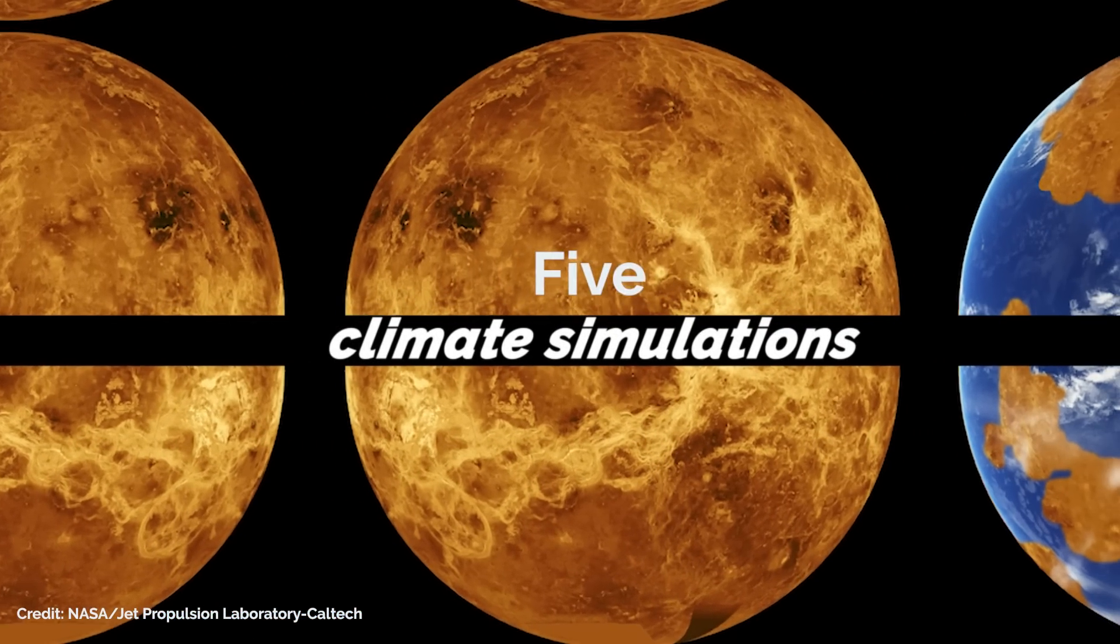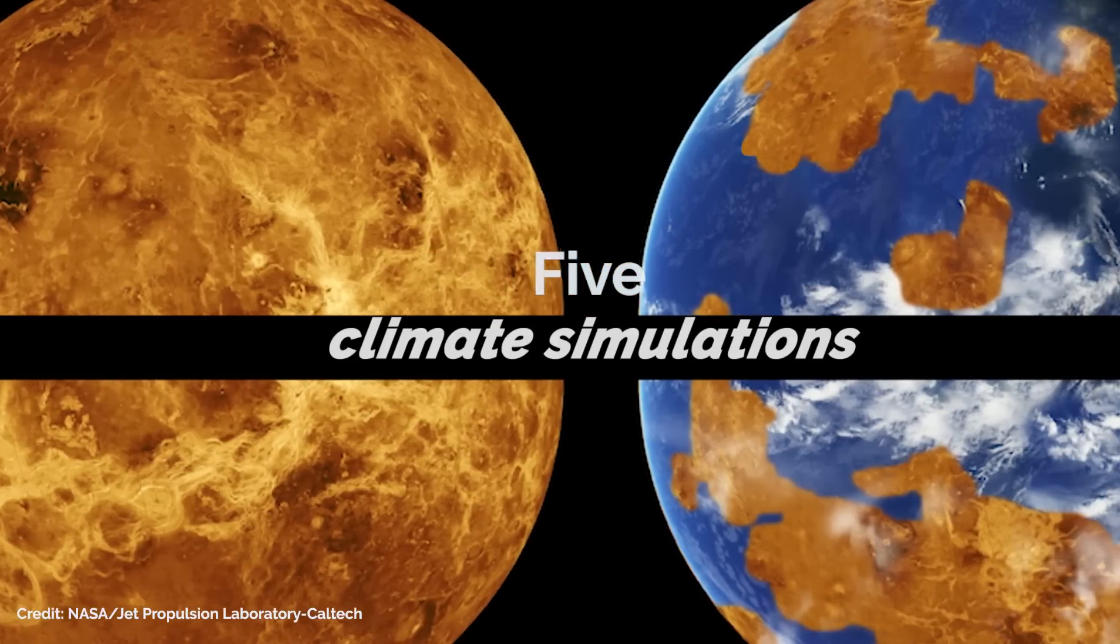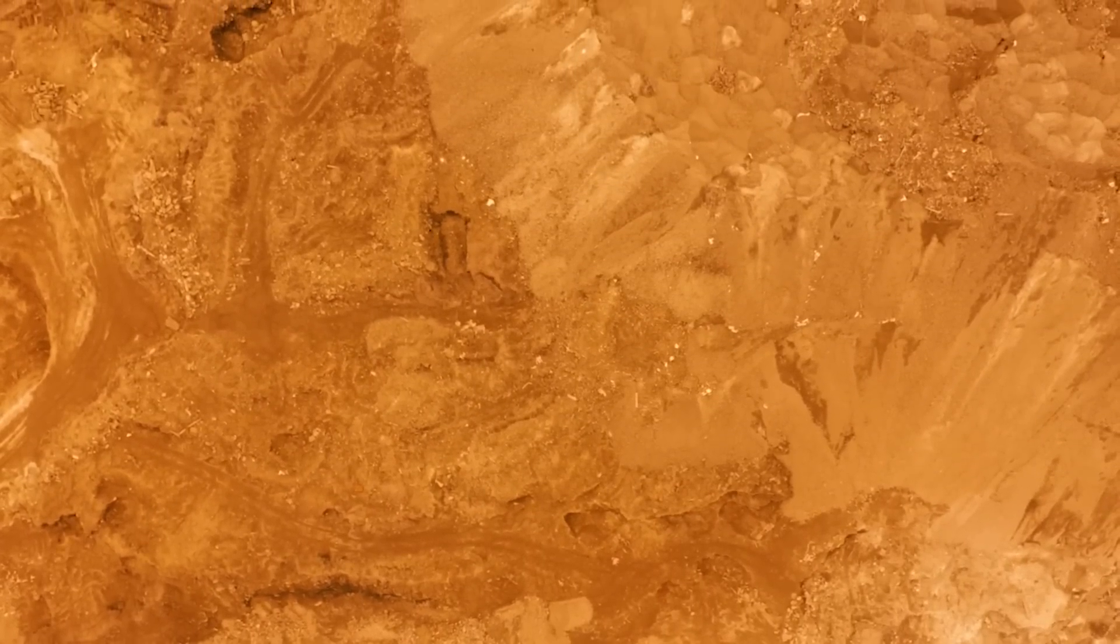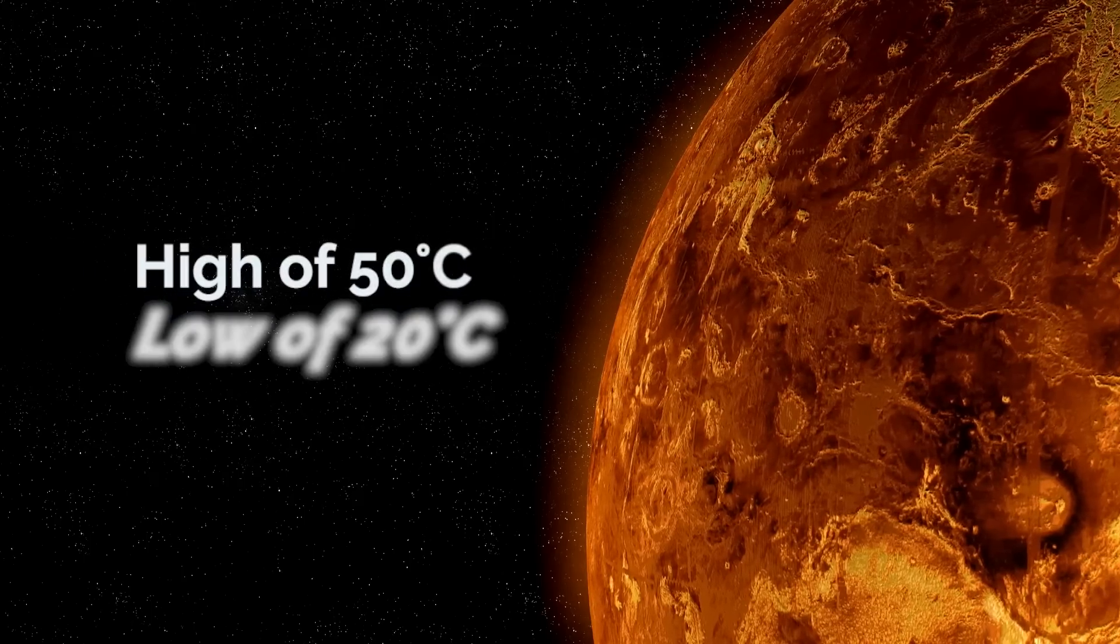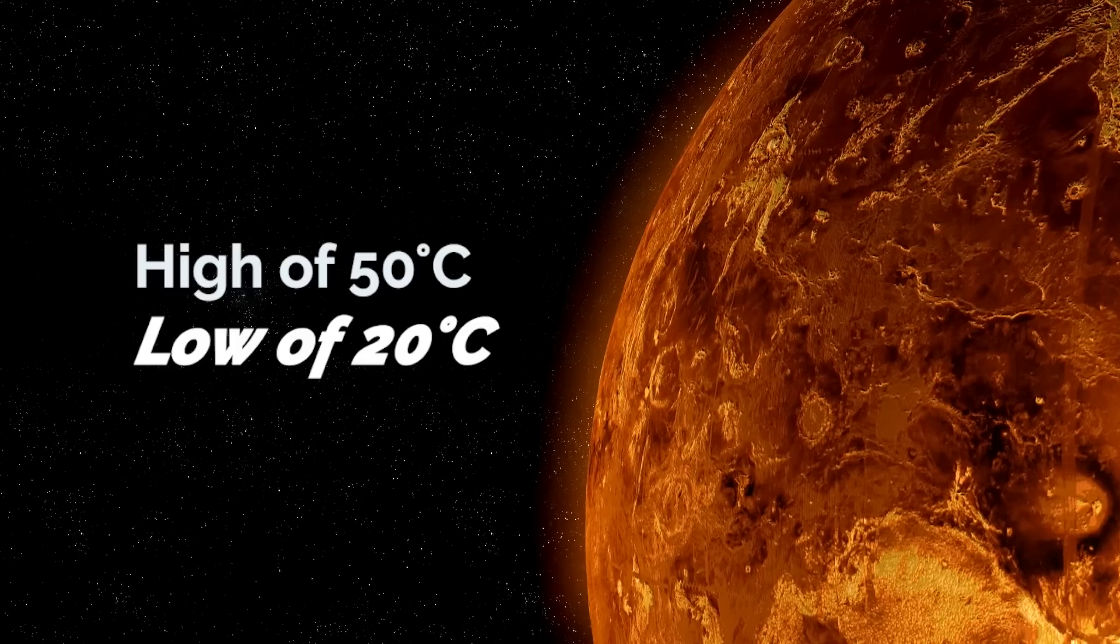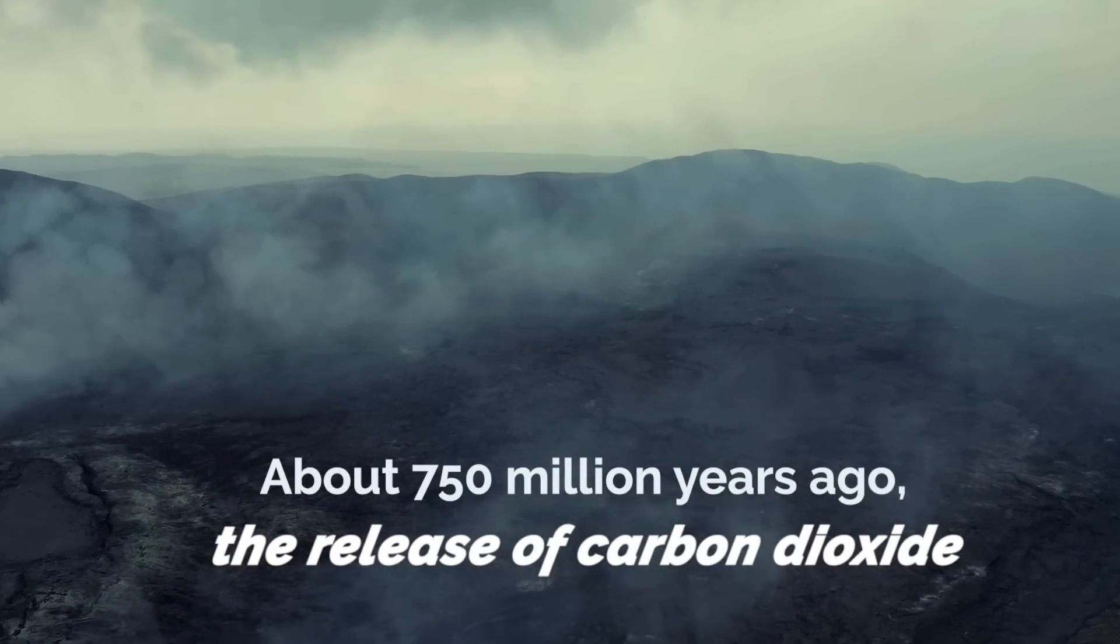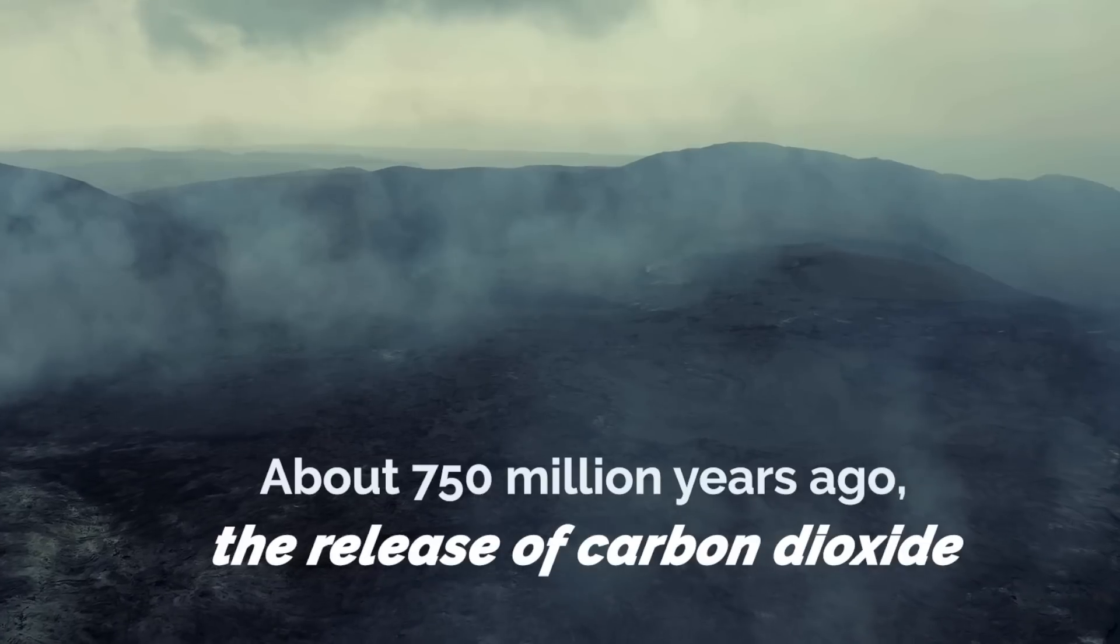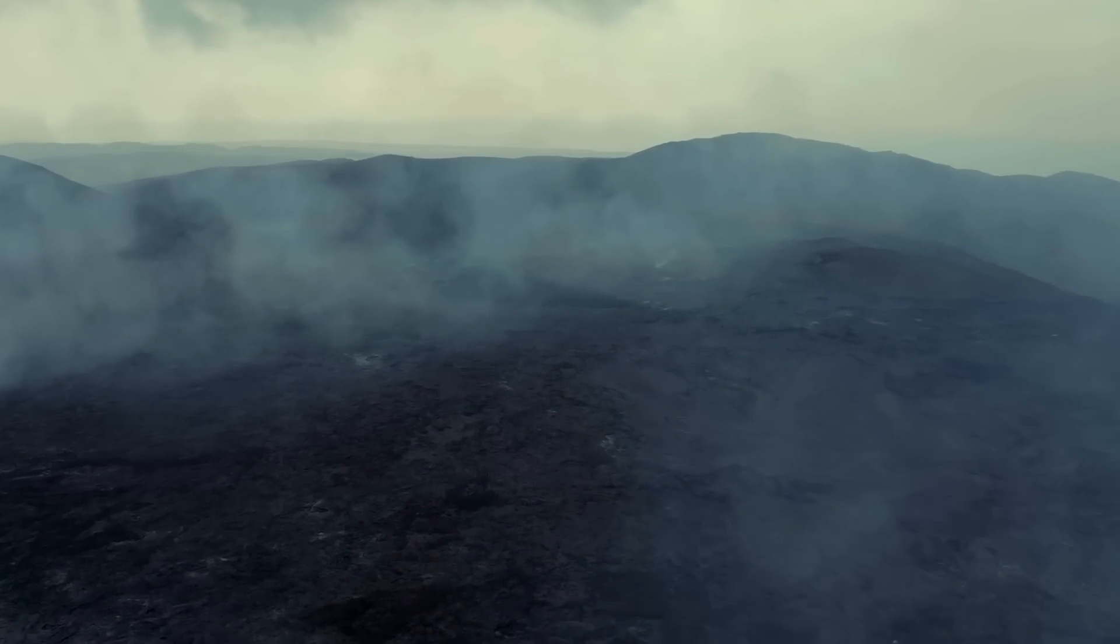However, a study by scientist Michael Way of the Goddard Institute for Space Sciences compared five climate simulations from Venus's past. Each scenario suggested that the planet could support liquid water and a temperature climate on its surface for at least 3 billion years. Those temperatures could have included a high of 50 degrees Celsius and a low of 20 degrees Celsius, which is enough to keep liquid water in its atmosphere. But about 750 million years ago, something triggered the release of carbon dioxide from the planet's rocks, terraforming its climate, evaporating all the water, and turning it into a planet without water or life.